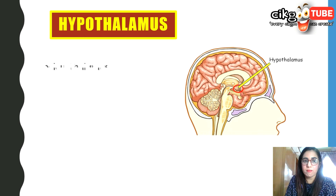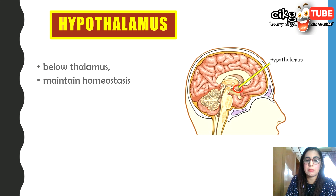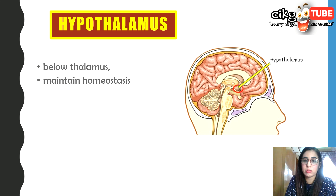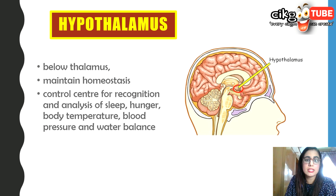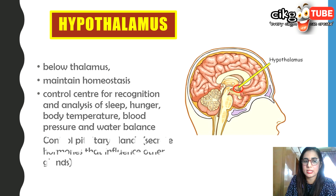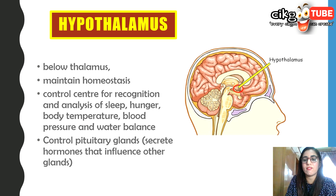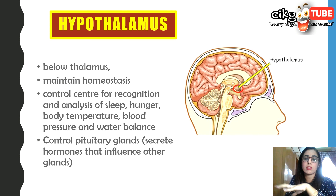The hypothalamus is located below the thalamus. It maintains homeostasis — you will see this structure again in chapter 13. It is a control center for the recognition and analysis of sleep, hunger, body temperature, blood pressure, and water balance. It also controls the pituitary gland to secrete hormones that influence other glands.